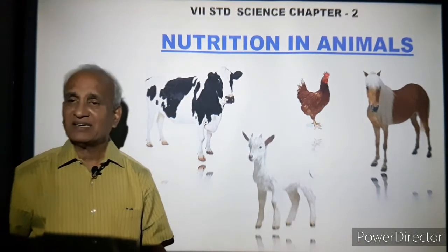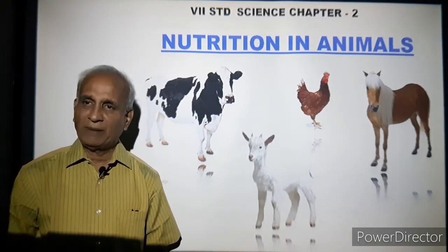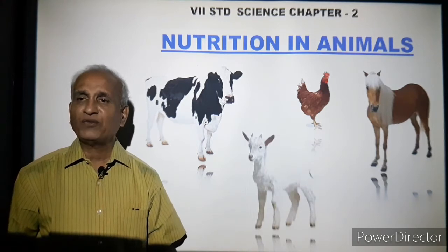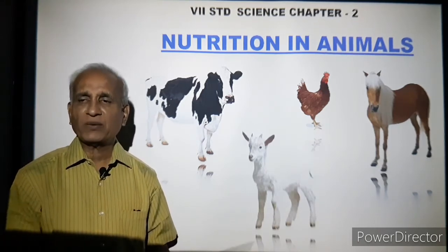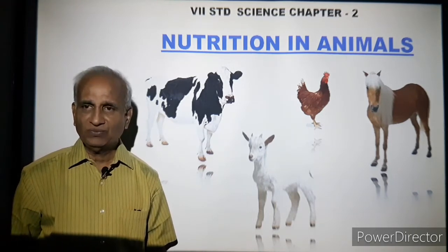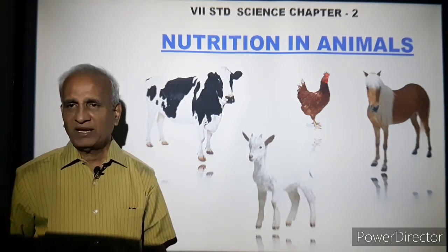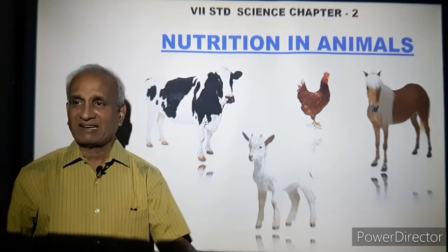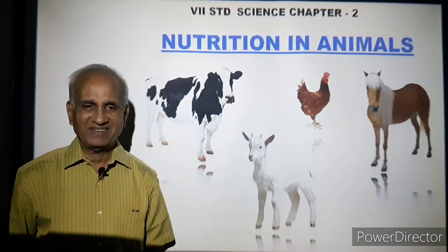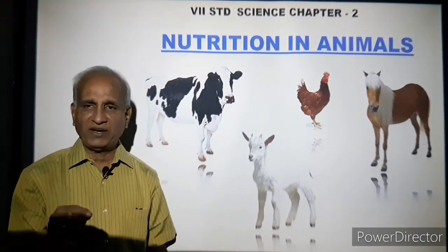We say the lion eats a deer and doesn't need any plant food at all. But how does the deer live? The deer depends on plants for its food. If plants are not there, the deer cannot feed itself and won't survive — then where is the question of food for carnivores? Carnivores too will die. So animals like tiger and lion are indirectly dependent on plants. They eat animals, but those animals eat plants. So all carnivores are indirectly dependent on plants.